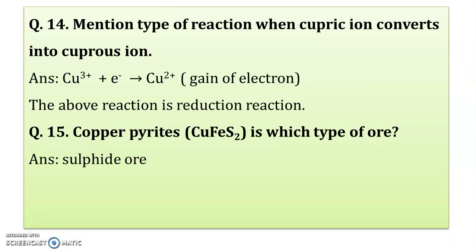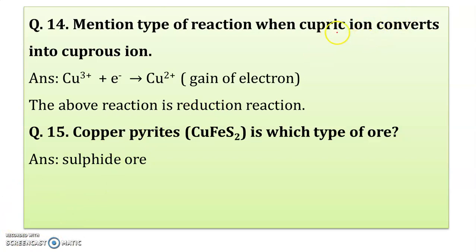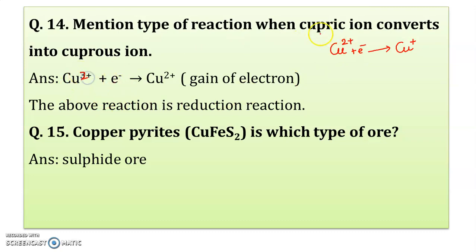Mention the type of reaction when Cu²⁺ ion converts into Cu⁺ ion. Cu²⁺ means higher valency — copper has two valencies: Cu²⁺ and Cu⁺. When Cu²⁺ is converted into Cu⁺, plus 2 converts to plus 1, one electron is gained. Gain of electron is the reduction reaction. So: Cu²⁺ + one electron → Cu⁺. This is the gain of electron; the above reaction is a reduction reaction.